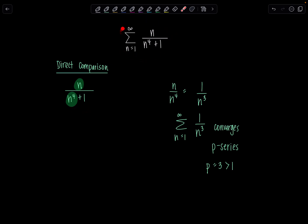If you're trying to say that your series diverges and you're doing direct comparison, then you have to show that your terms are larger than the terms of another divergent series. So the direction of the inequality matters — it's very specific.